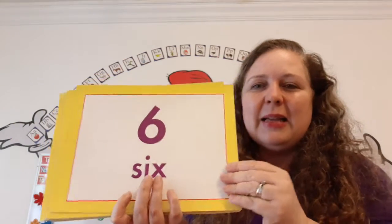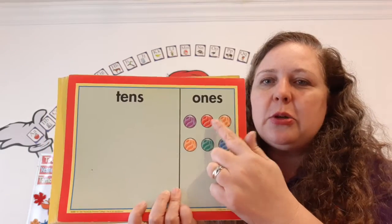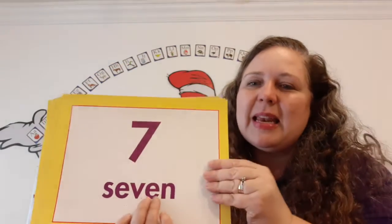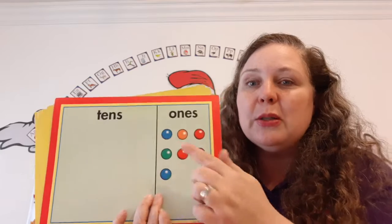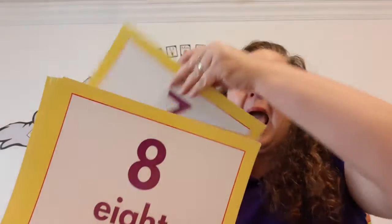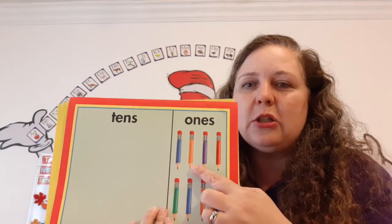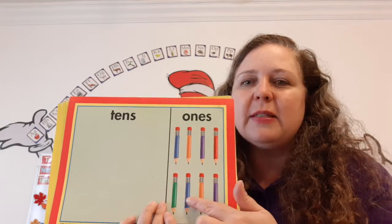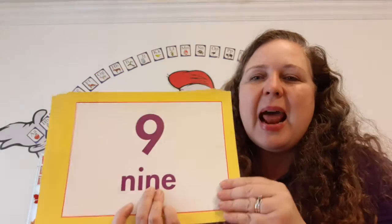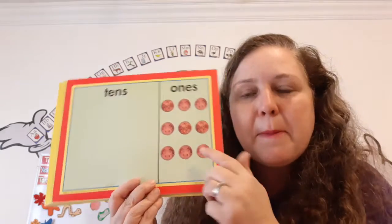Six — marbles. One, two, three, four, five, six. Seven. Eight. Pencils — one, two, three, four, five, six, seven, eight. Nine — pennies. Money, money in my pocket.